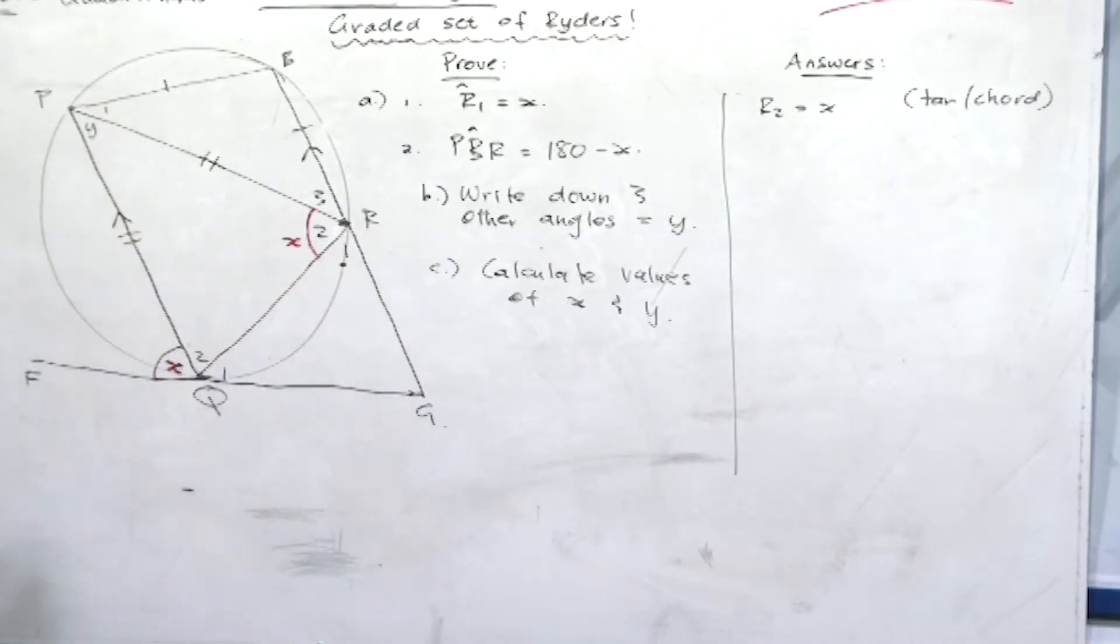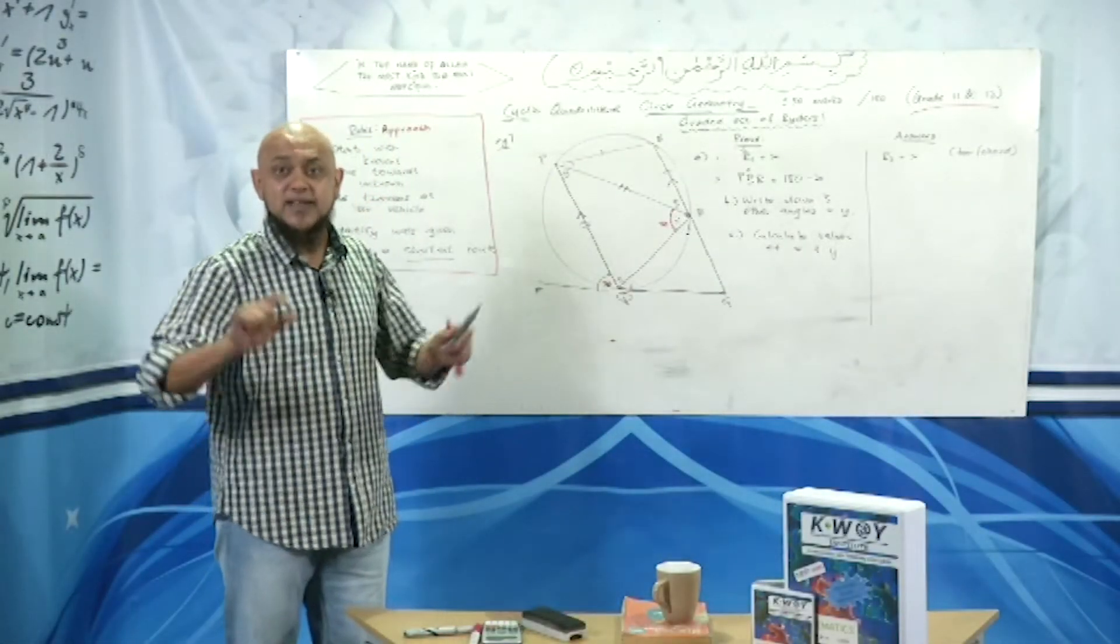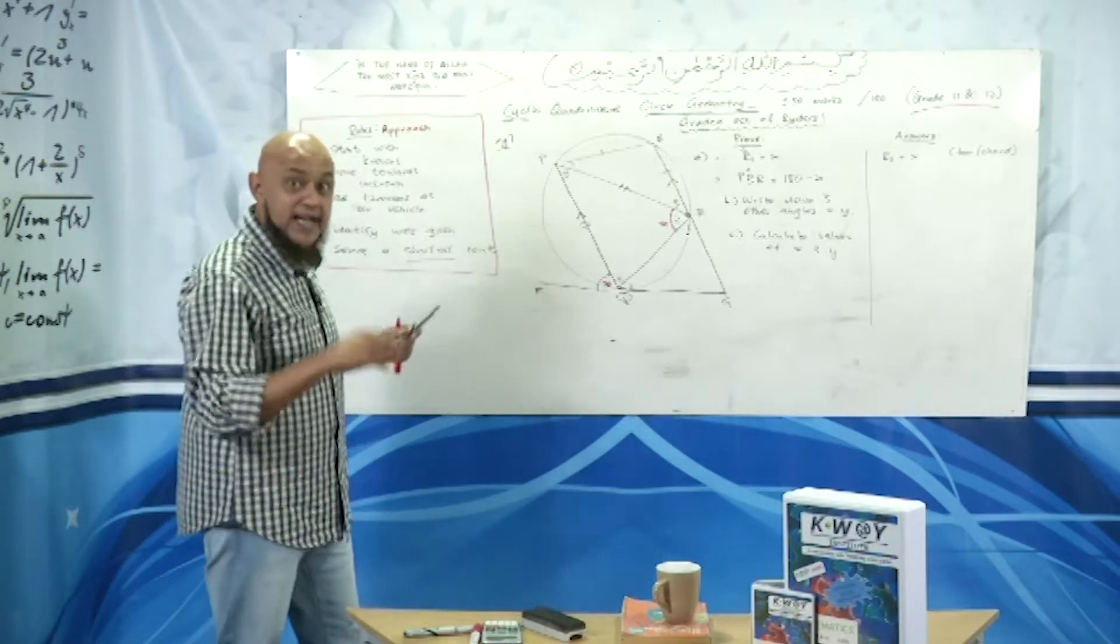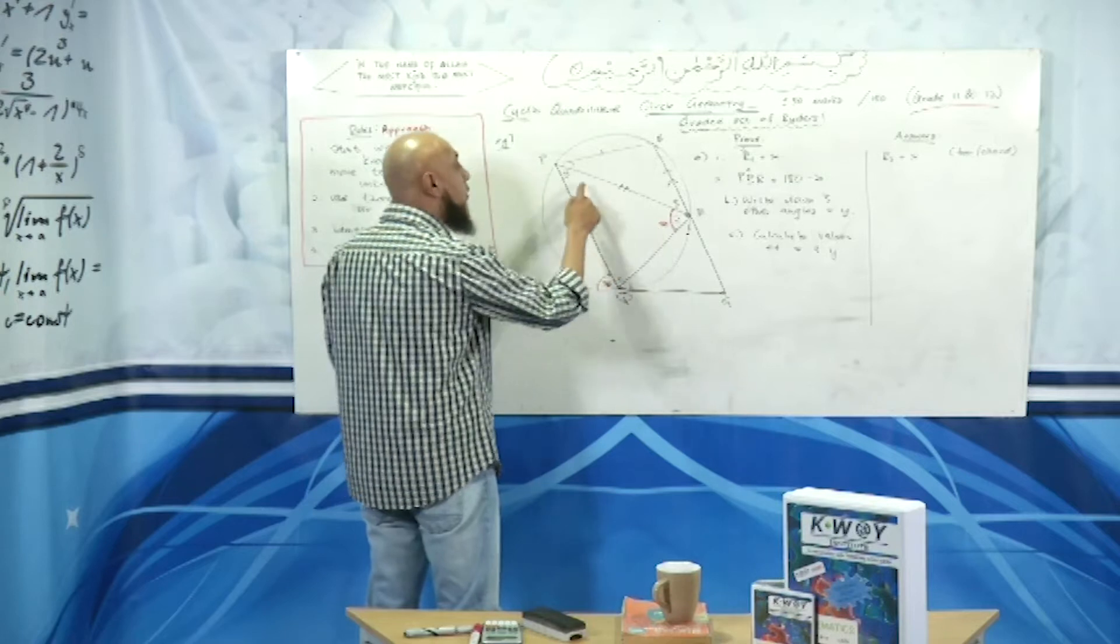Is r1 related to anything as it stands? No. So we need to use an indirect method. There is no direct link between r1 and any angle. Okay, so we also know that this is an isosceles triangle.